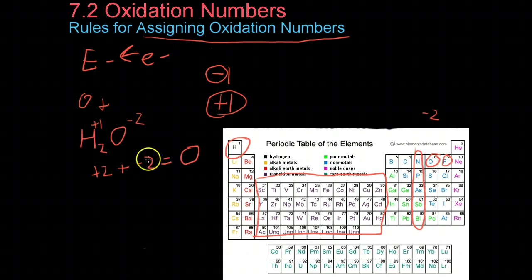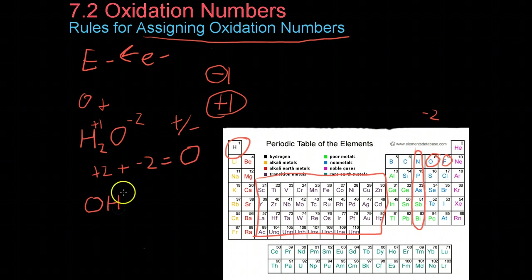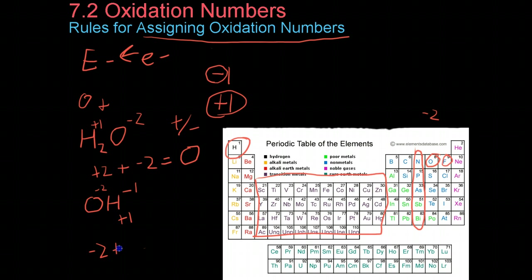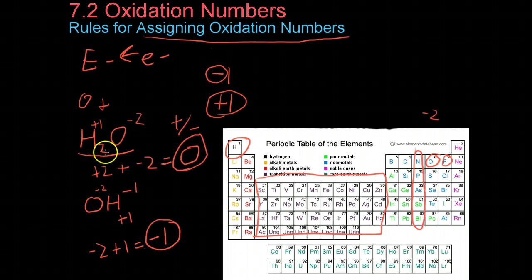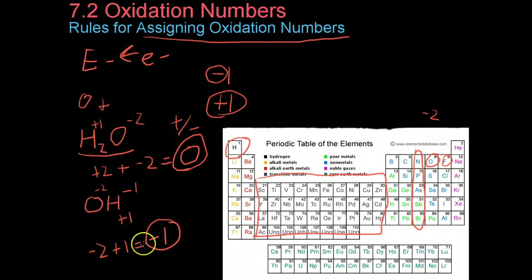Polyatomic ions are not neutral — they end up with some positive or negative charge. For example, hydroxide is OH⁻, with a charge of -1. Looking at the oxidation numbers of its components: oxygen has -2 and hydrogen has +1. Adding them together: -2 + 1 = -1, which matches the charge on the polyatomic ion. So for most neutral compounds, oxidation numbers must total 0. For polyatomic ions, the total oxidation numbers must add up to the total charge on the ion.